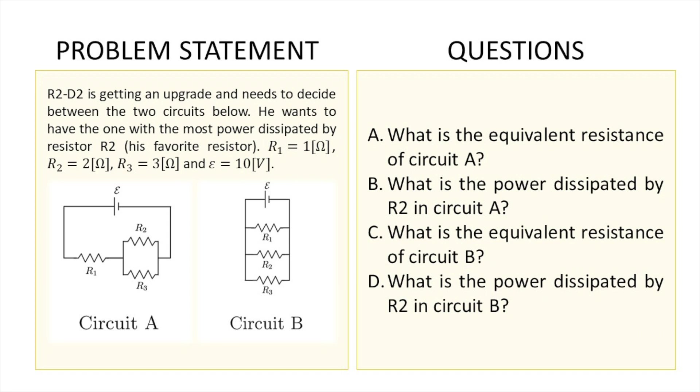So this is a problem that we're going to be dealing with. It's basically a two-part problem because we have two different circuits, A and B, and for both of them we're given the values of all the resistors and also the battery. For both of them separately we have to figure out the equivalent resistance and then also the power dissipated by one of the resistors.